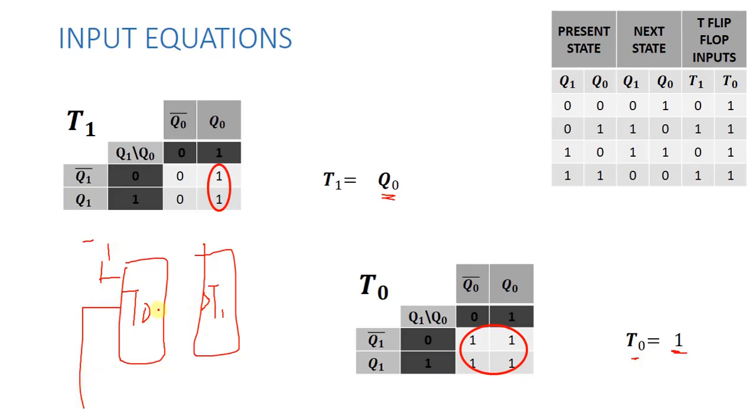The clock is common for all the flip-flops. All the flip-flops will run on the system clock. T0 equals 1. T1 connects directly to Q0. This is our Q0. T1 connects with Q0. This is our 2-bit counter using T flip-flops.